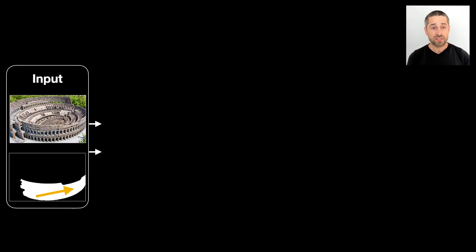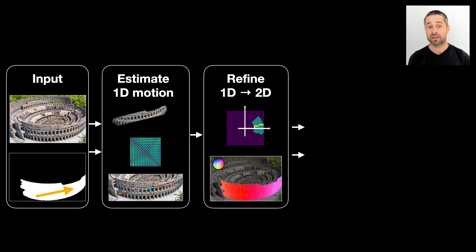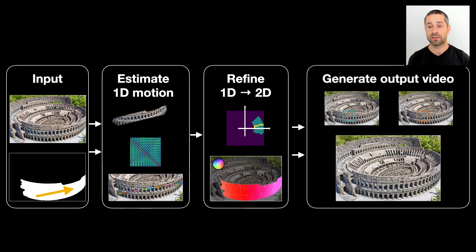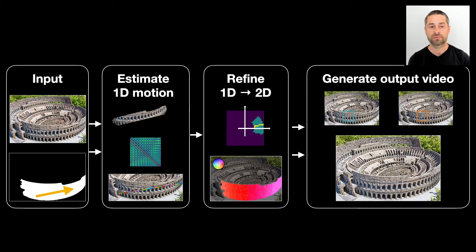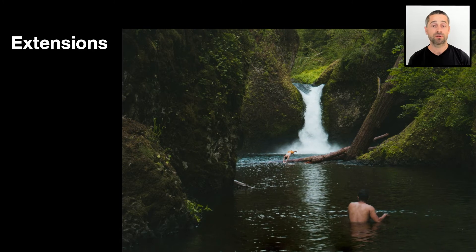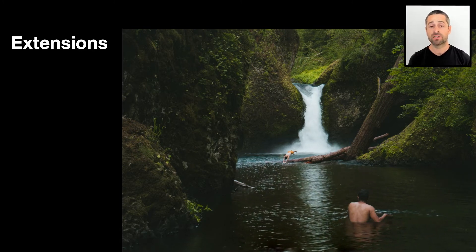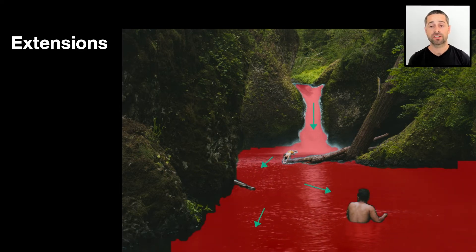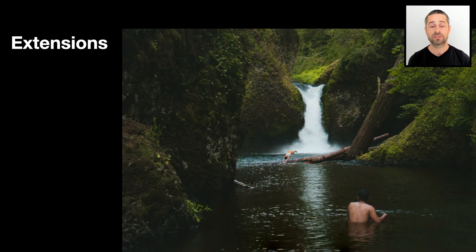To recap, we start from an input photo mask and direction, detect 1D self-similarity, and refine it to 2D via a CRF formulation. Then we use the resulting motion field to generate a seamlessly-looking video. In some cases, the user wants multiple areas to move, or to create more complex motion. In such cases, we break the moving area according to the number of directions the user specifies, and apply the algorithm to each one of them individually.